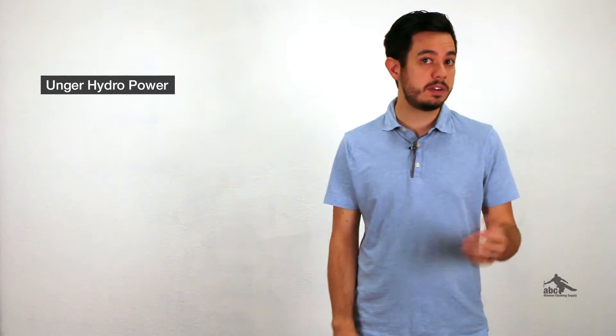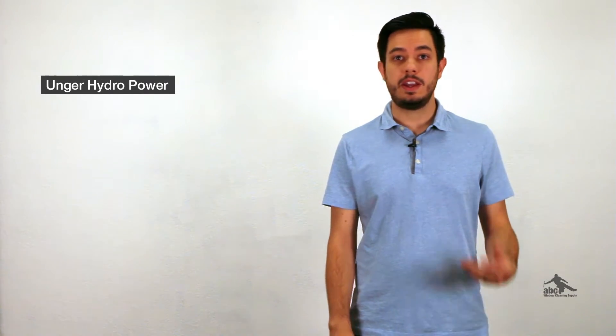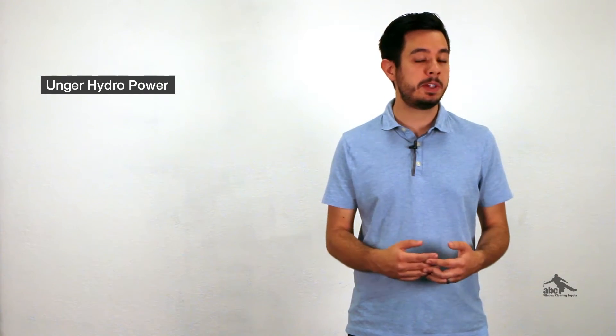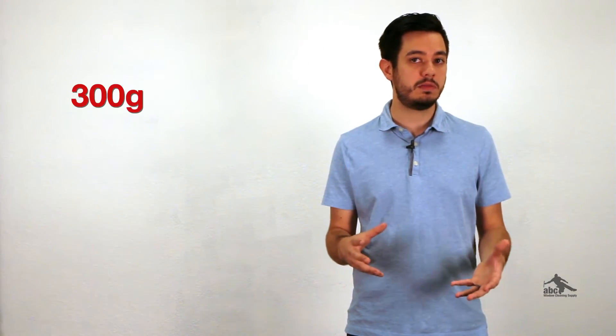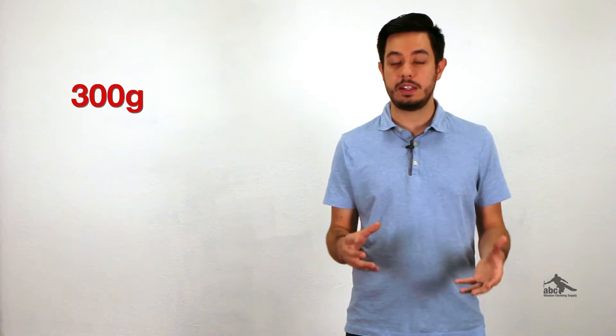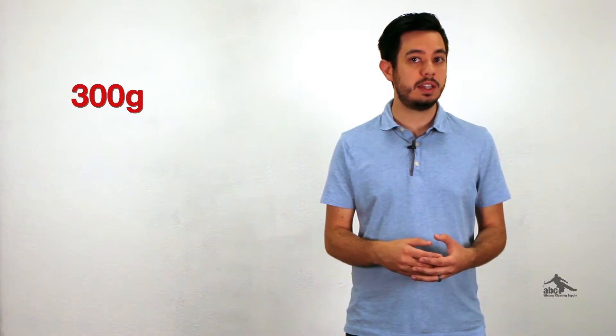The Unger hydropower system is hands down one of the best DI systems out there. If you're looking into a DI-only option we'd highly recommend that one. Unger says that their DI filter is rated for 300 gallons at 100 TDS.